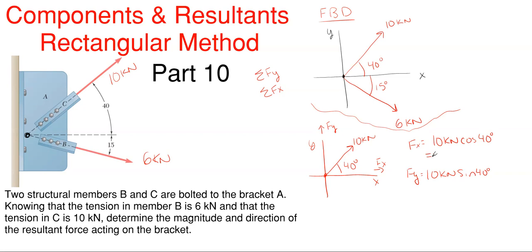So the x component of 10 cosine of 40 gives 7.66 kilonewtons of force acting to the right, and then Fy gives 6.43 kilonewtons of force acting in the upward direction. Those are my x and y components for my 10 kilonewtons of force.